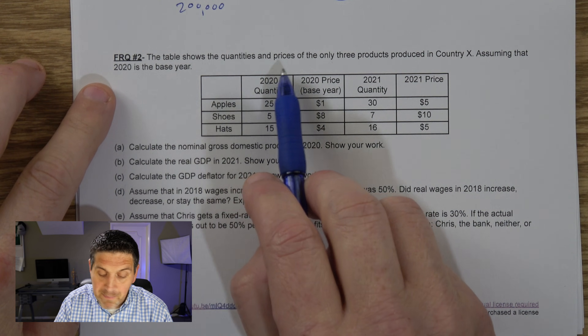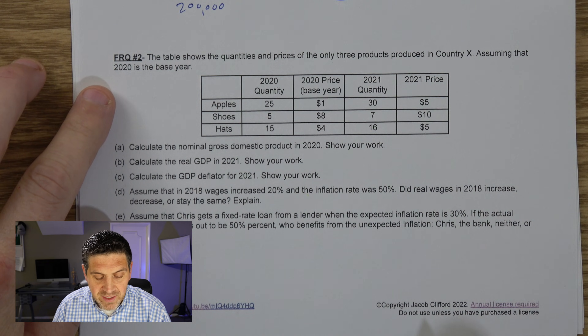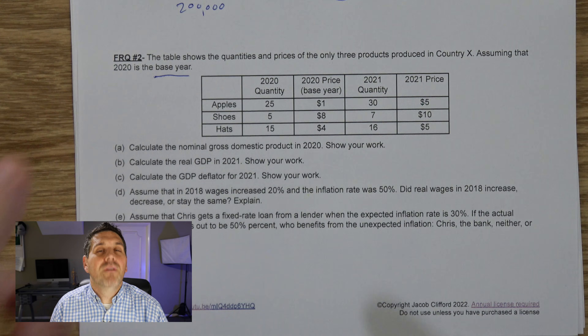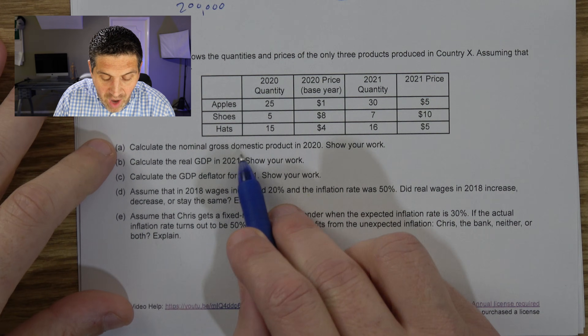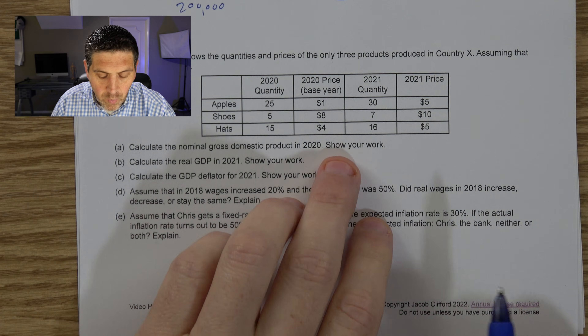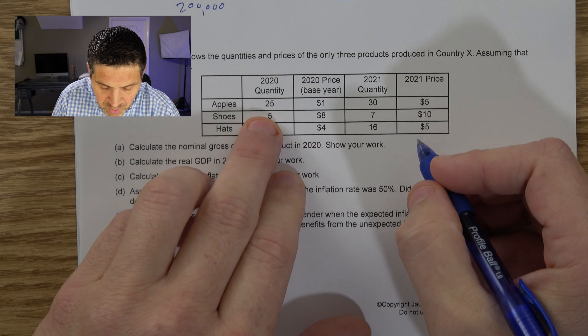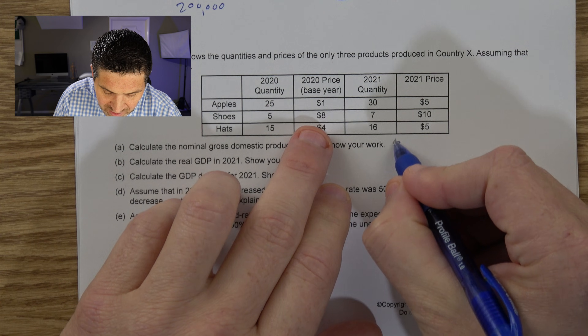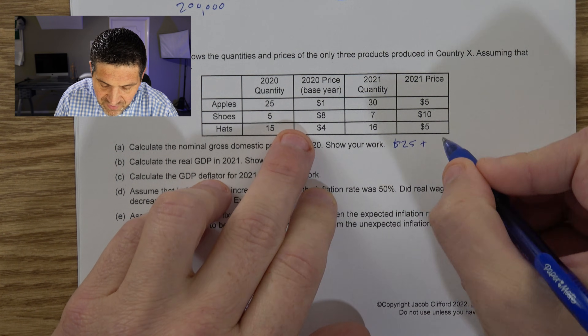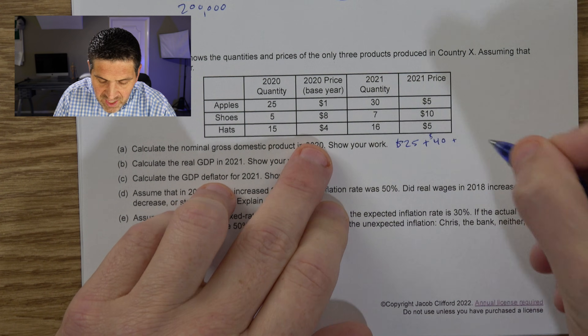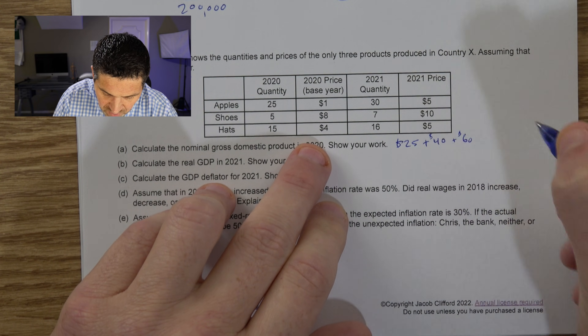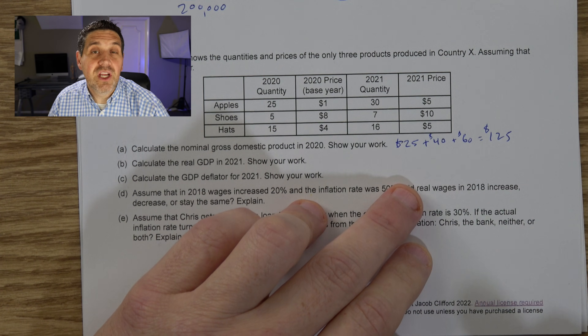Free Response Number 2: the table shows the quantities and prices of only three goods that can be produced in Country X. Assume 2020 is the base year. Calculate the nominal gross domestic product for 2020. To figure out the nominal GDP, that's just the total value of all things produced in 2020. Apples: 25 times $1 = $25. Shoes: 5 times $8 = $40. Hats: 15 times $4 = $60. Grand total: $125 nominal GDP. Since 2020 is the base year, this is also the real GDP — real and nominal are the same number in the base year.